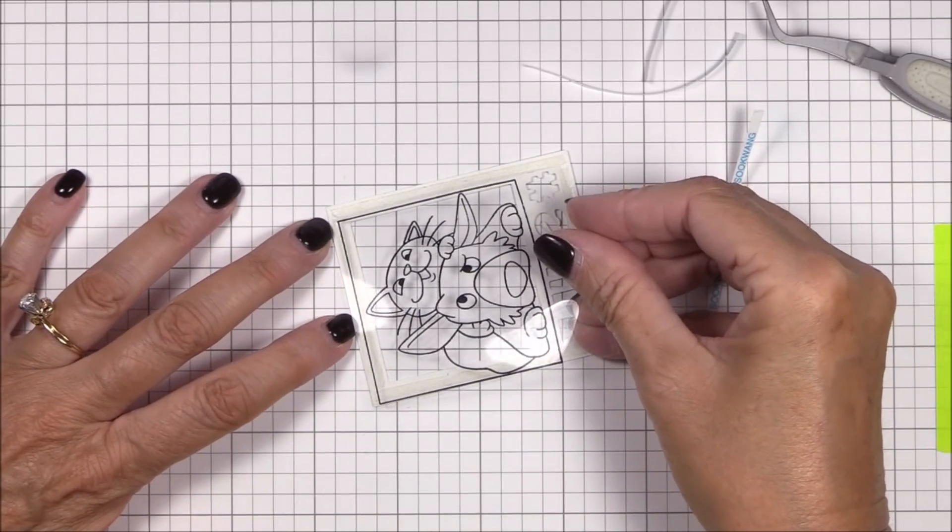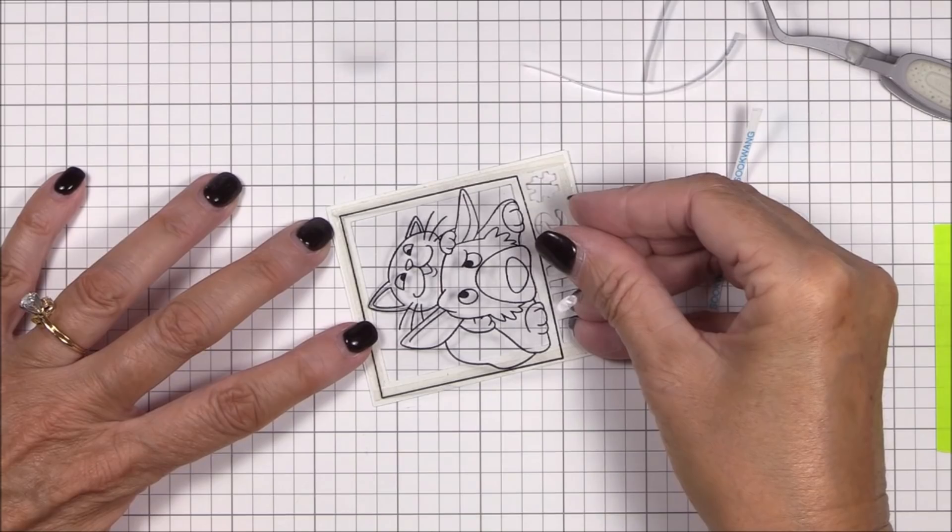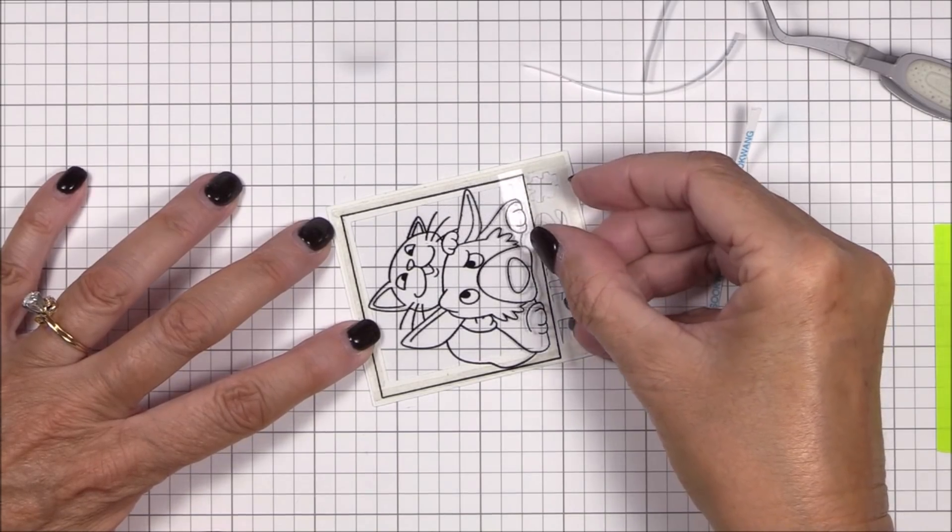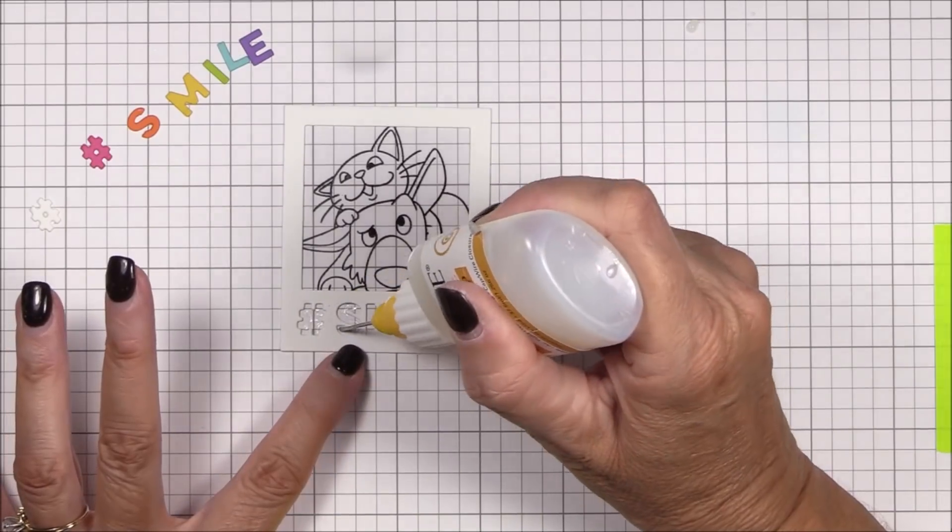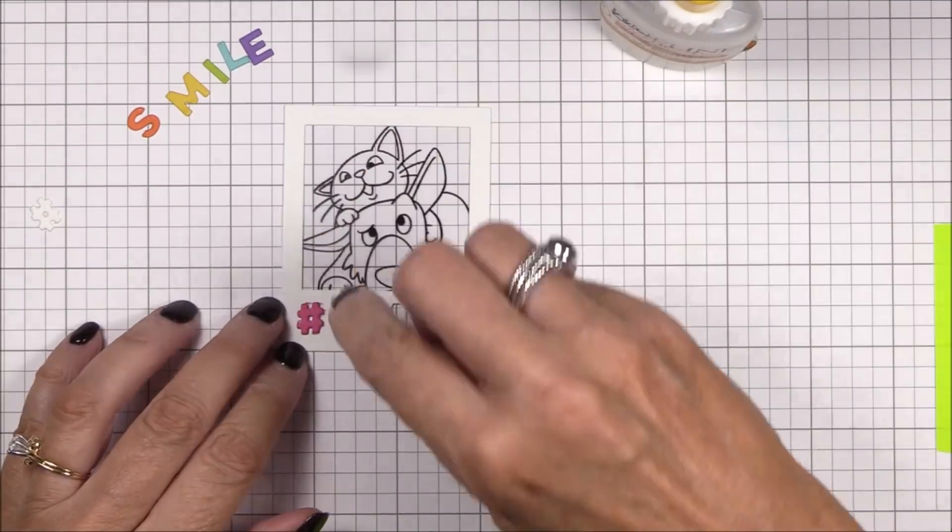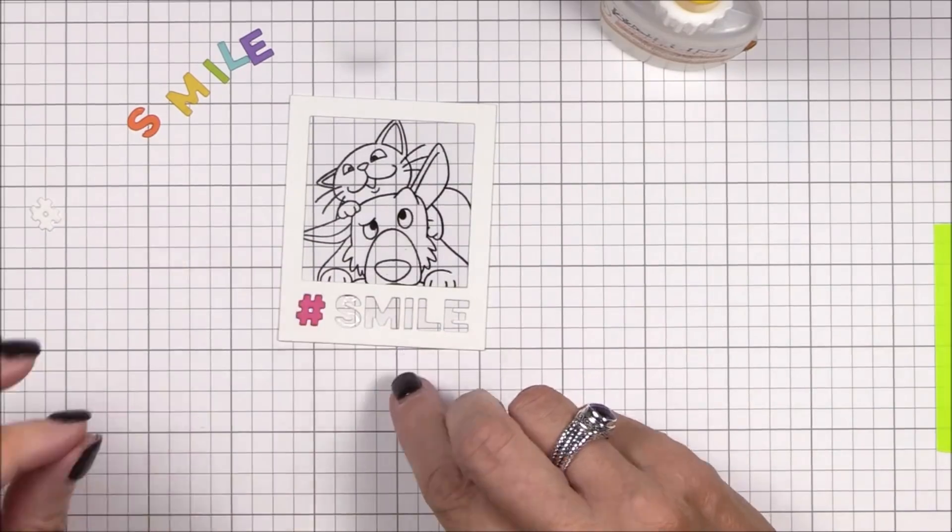I'll remove the release paper and adhere the frame to the stamped acetate panel. Be sure and align the aperture of the Polaroid shaker frame with the outside frame of the stamped image. The Polaroid frame should cover the outside lines of the image perfectly.